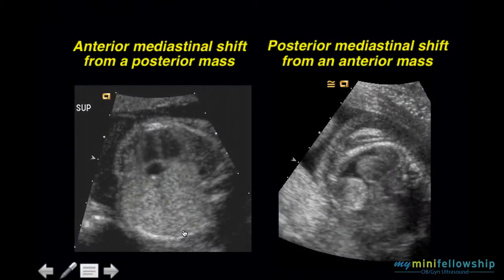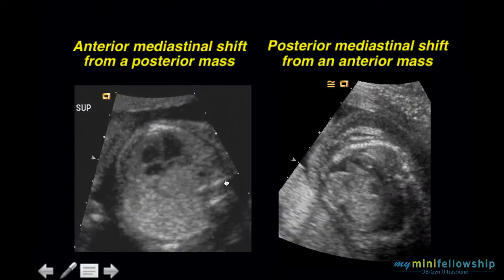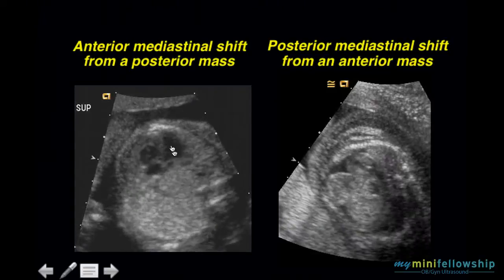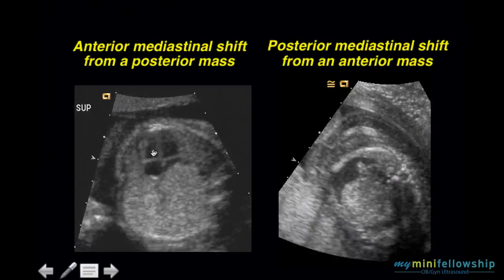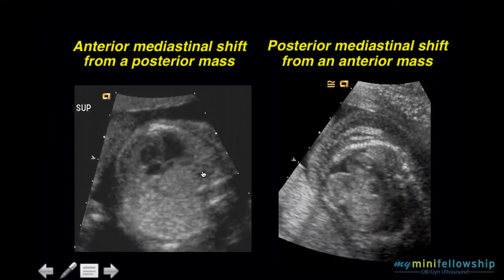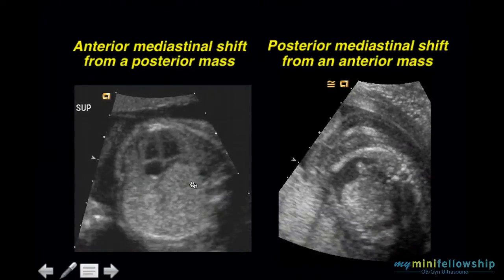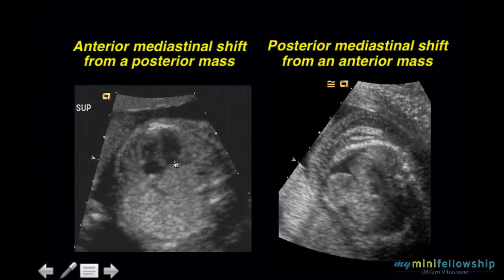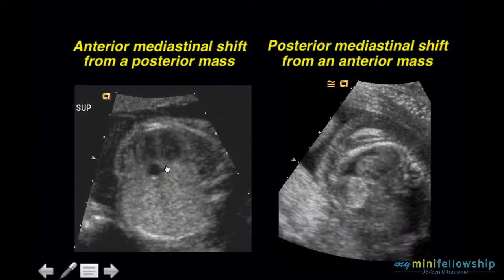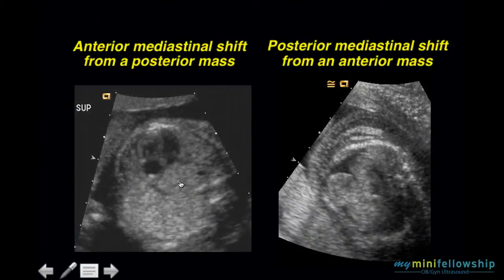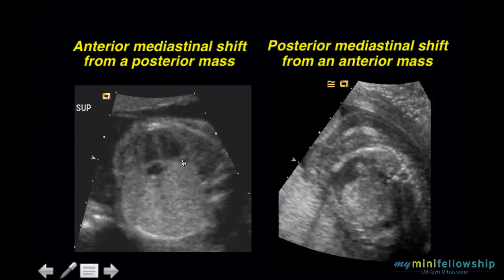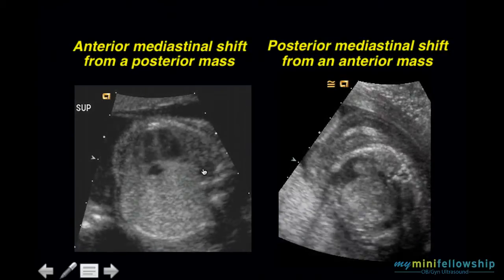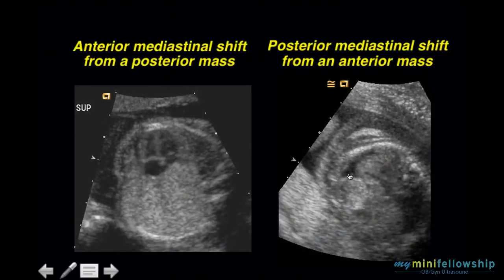Here we have spine, descending aorta, left atrium, left ventricle, right ventricle, right atrium. Quite obviously, there's a gap between the aorta and the left atrium because of the presence of this rather formidable mass.